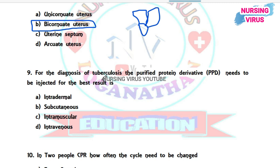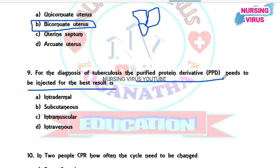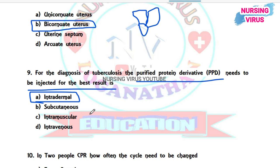Question 9: For the diagnosis of tuberculosis, purified protein derivative (PPD) needs to be injected by which route for best results? This is a direct question — intradermal administration of tuberculin (purified protein derivative) gives the best result for the Mantoux test for TB confirmation.